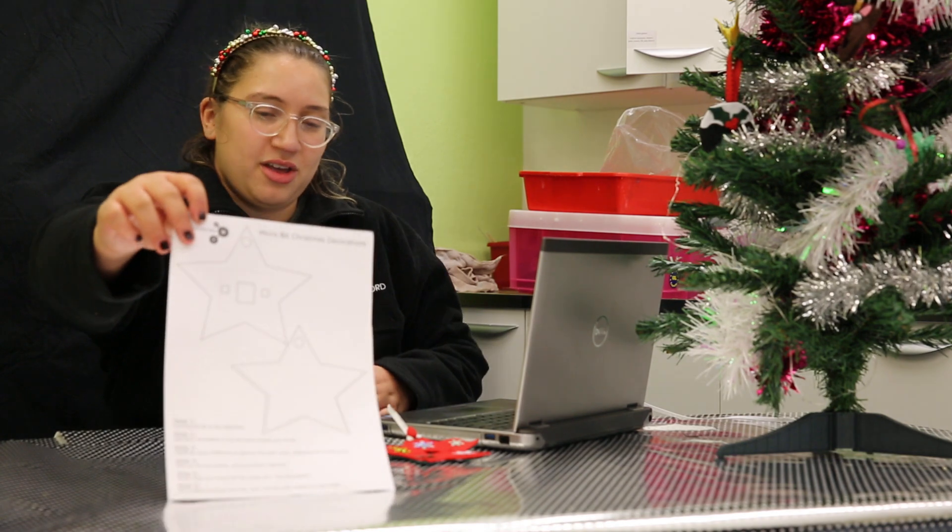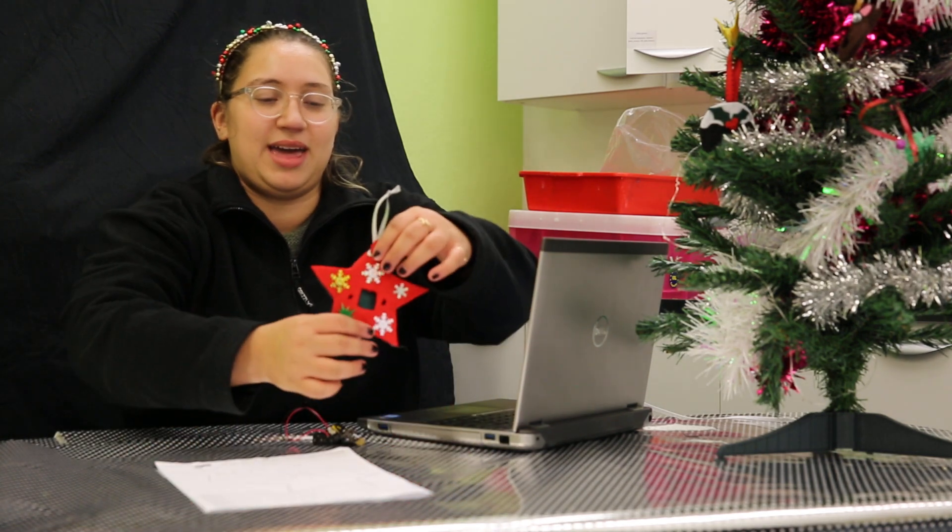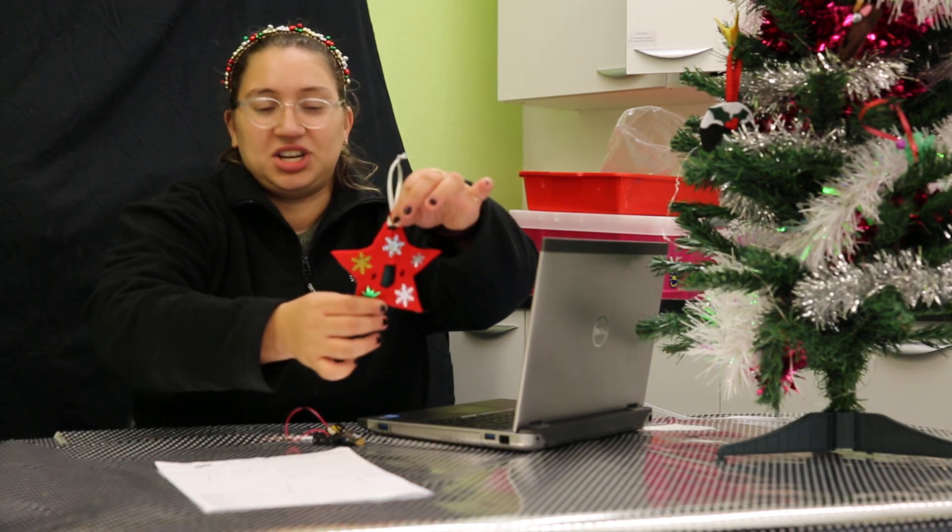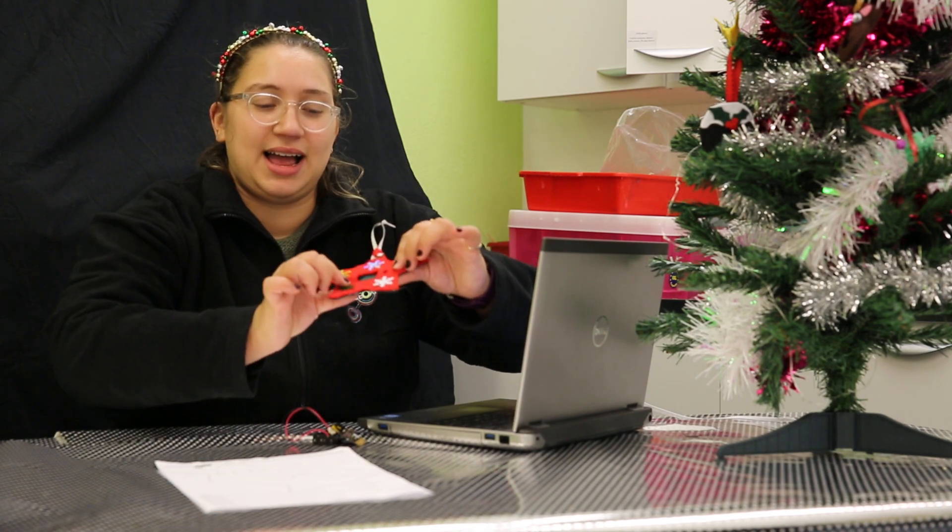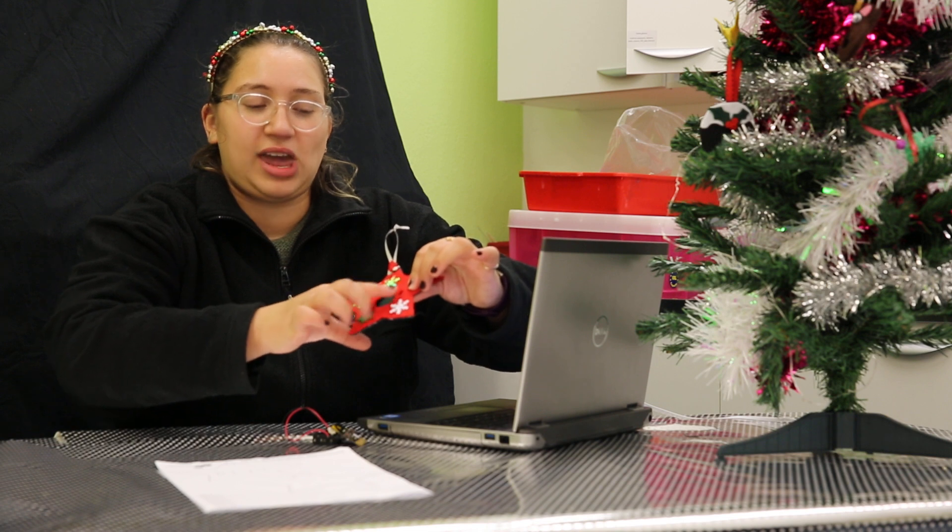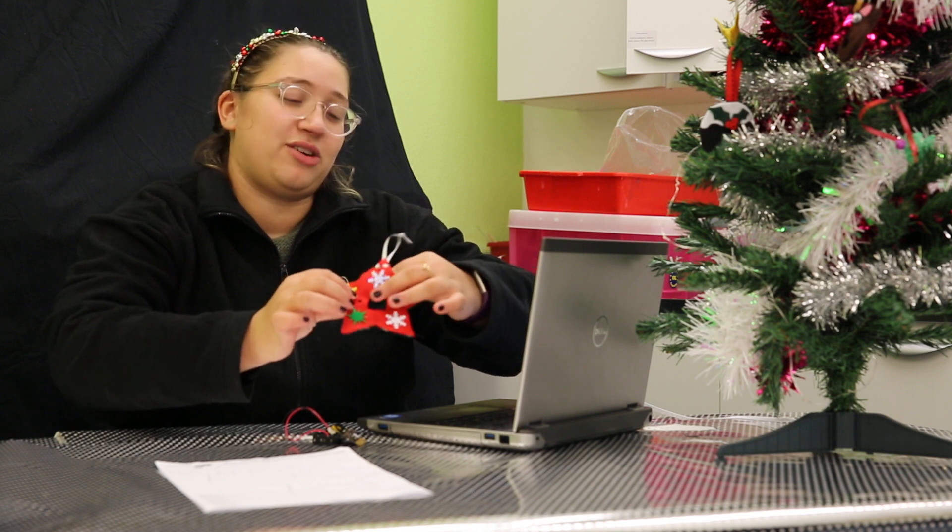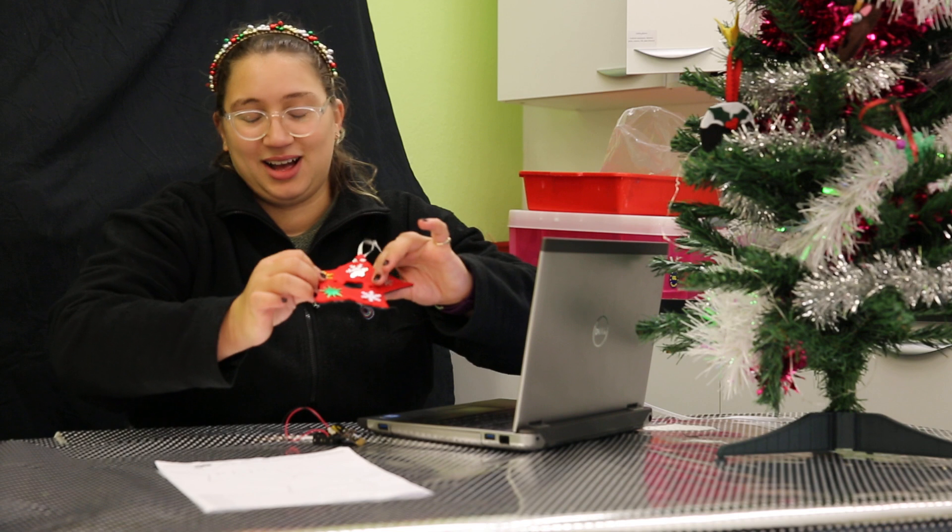You're going to cut these templates out and use them to make the same shape in felt. Now you can decorate them however you like. Just make sure that you align the spaces for the screen and the buttons for your micro:bit so you can still use it while it's hanging on your Christmas tree.